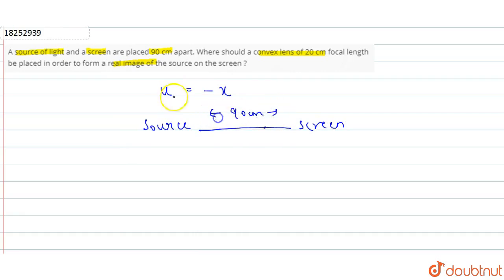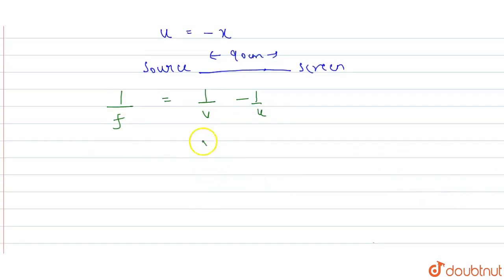We have u as minus x. Now we know the formula for focal length. What is 1 upon f? 1 upon v minus 1 upon u. So we can say f equals u into v upon u minus v.